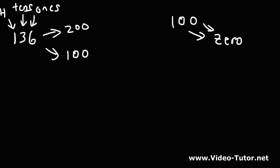To figure out which one we should round it to, we need to look at the digit to the right of the digit that we're trying to round. We're trying to round to the nearest hundred, so we need to look at the tens place. If this digit is four or less, we're going to round it down. If it's five or more, we're going to round it up.